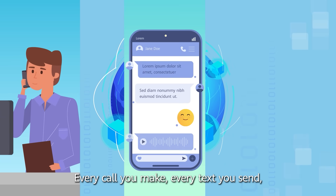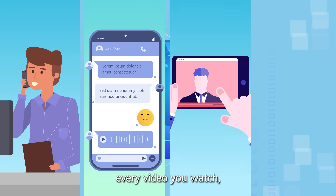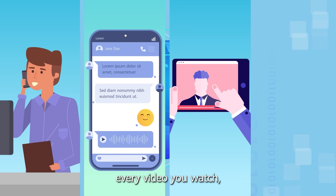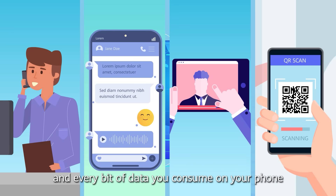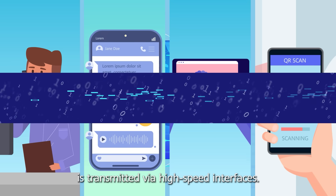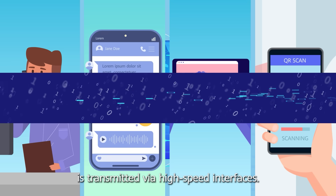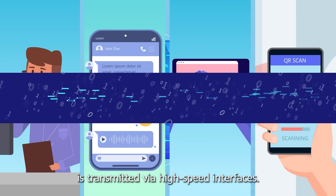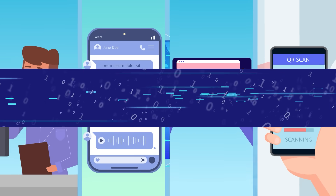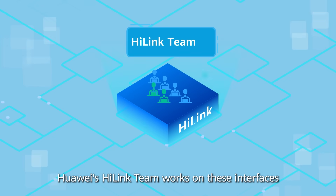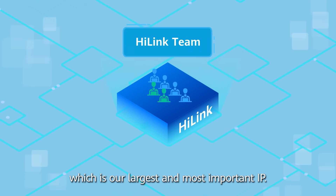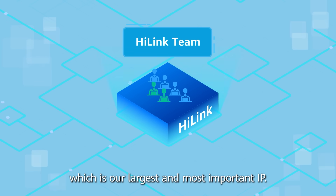every text you send, every video you watch, and every bit of data you consume on your phone is transmitted via high-speed interfaces. Huawei's Hi-Link team works on these interfaces, which is our largest and most important IP.